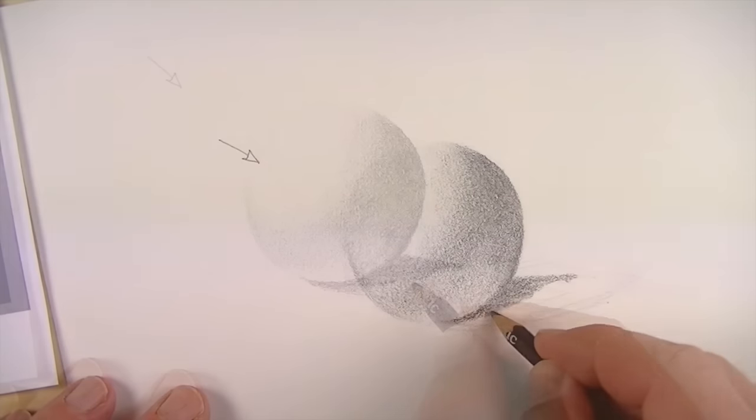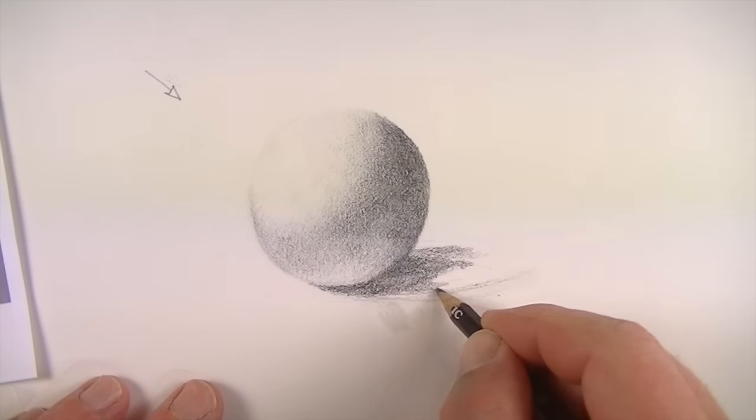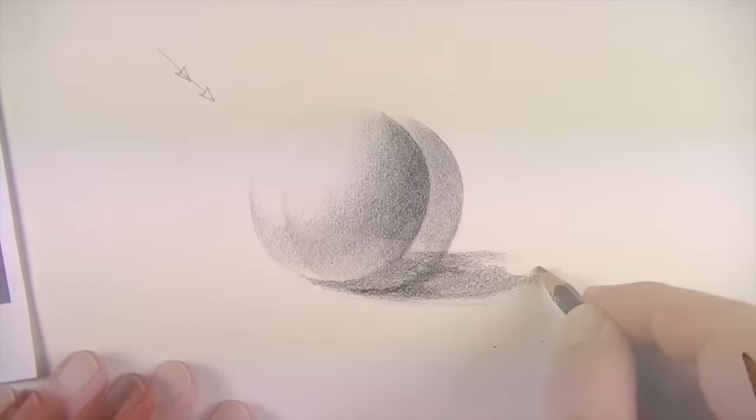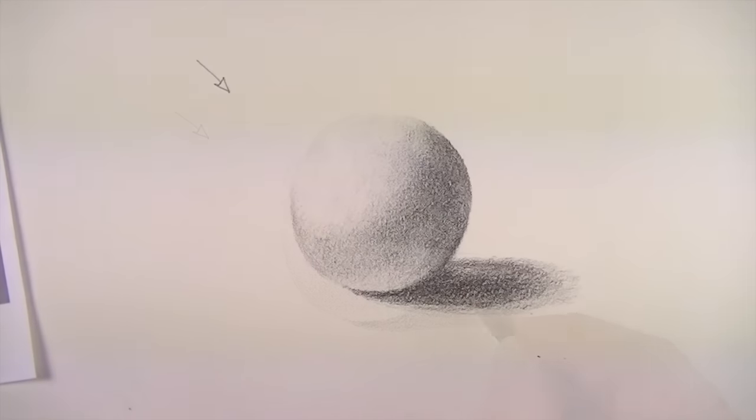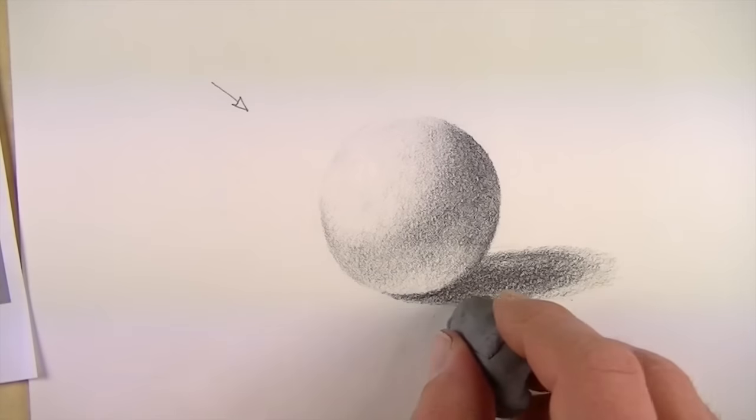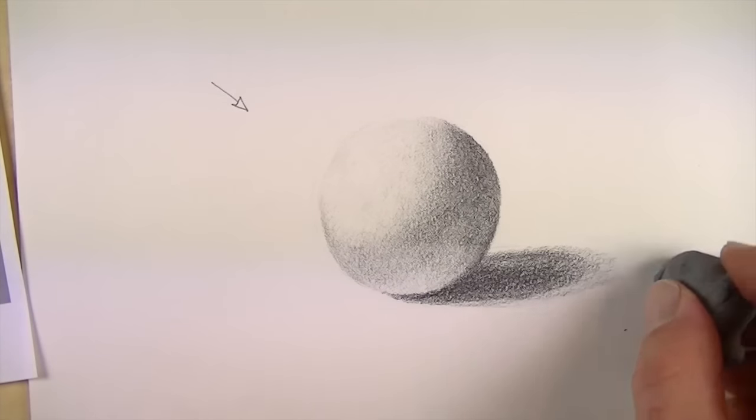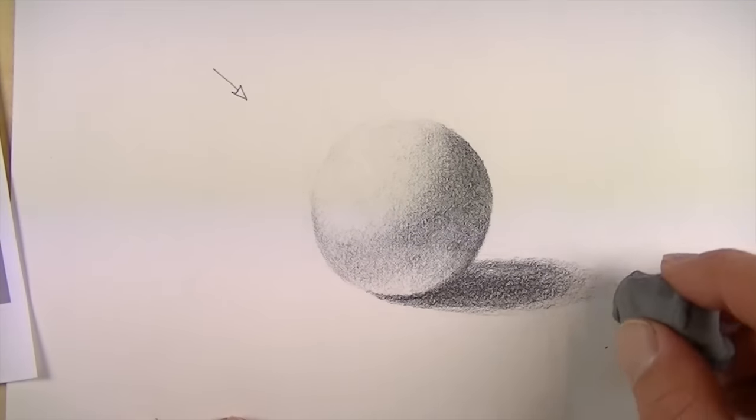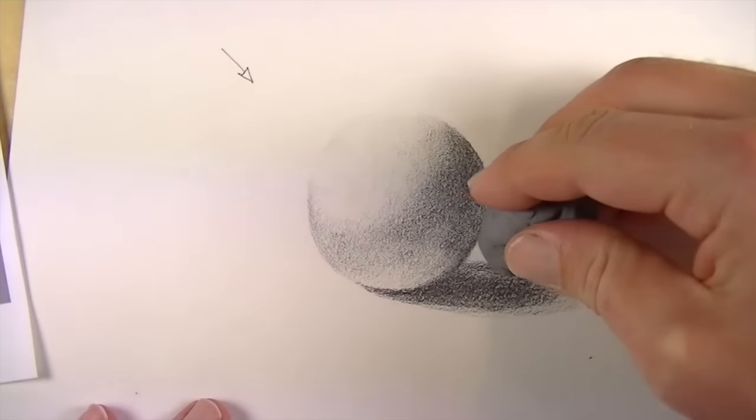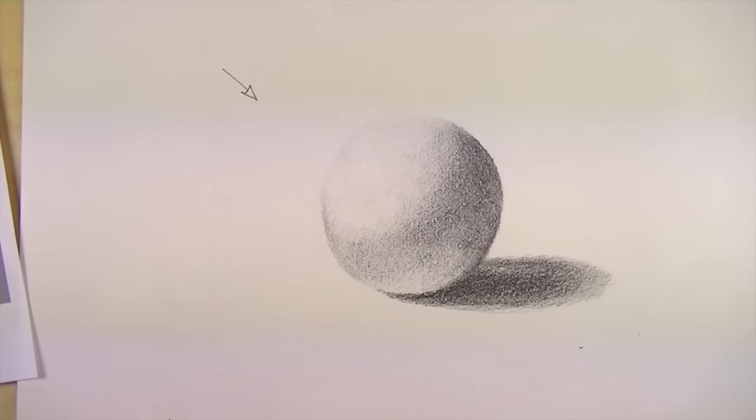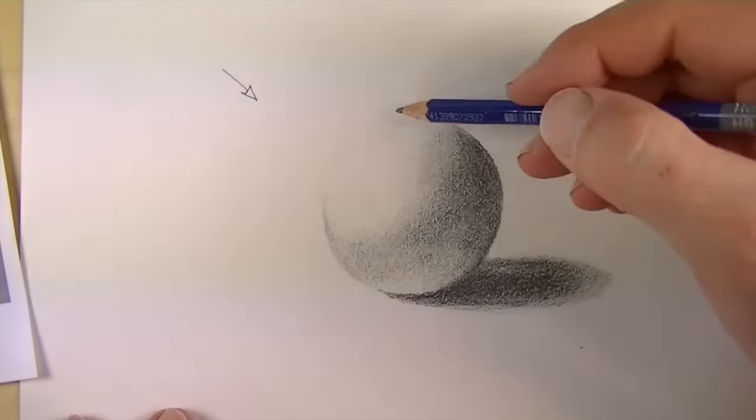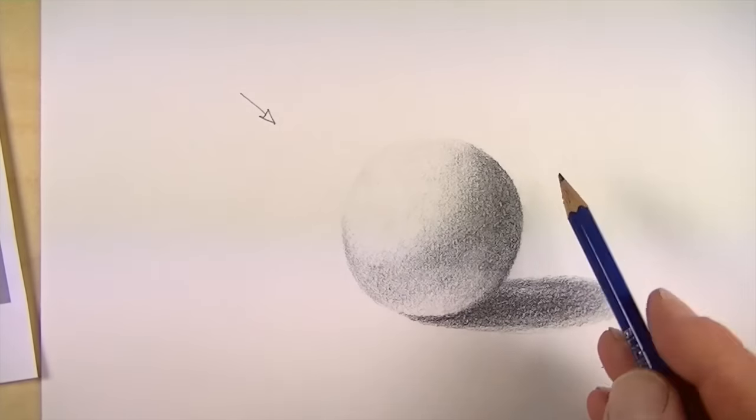Now you might notice here that we're not using any blending tools at all. We're just relying on the pressure that we place on the pencil to create the gradations of value. All right, now using the kneaded eraser, I'm just going to kind of clean up that edge a little bit. All right, there we go. All right, now I'm going to put a little bit of value behind here, just so we can see the contrast.